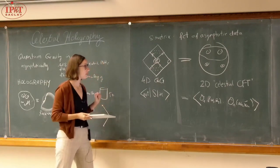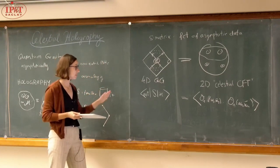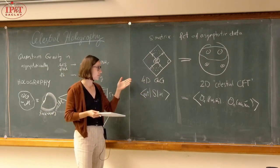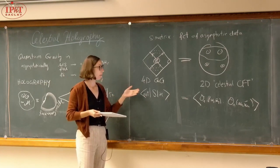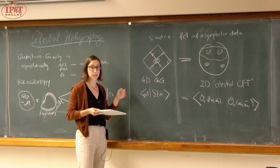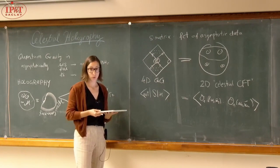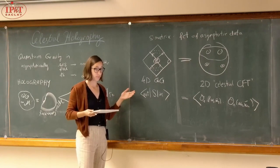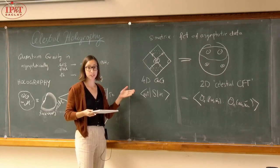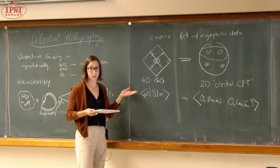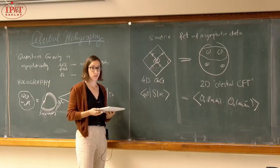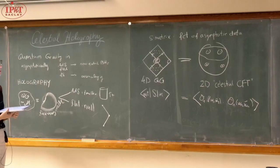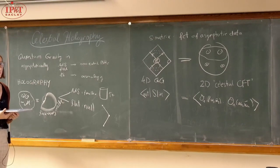The statement of holography in asymptotically flat space is not restricted to four dimensions. The more general statement is that quantum gravity in D dimensions is dual to some theory that lives on a co-dimension-2 sphere. Some things like asymptotic symmetries depend on which dimensions you are in and can look very different. Technically 3D might be simpler, but conceptually perhaps more tricky.